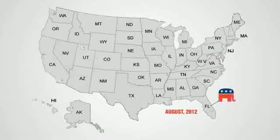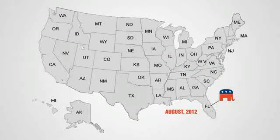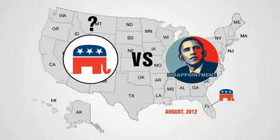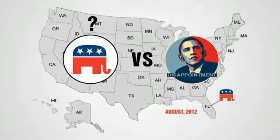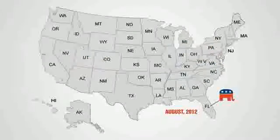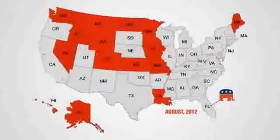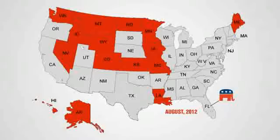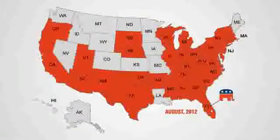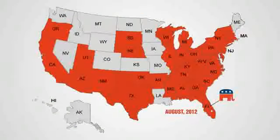In August 2012, the Republican Party will hold a national convention in Florida in which delegates will officially vote for a Republican nominee to run against Barack Obama. Each state has its own process for electing these delegates, either through a caucus system or a primary system.